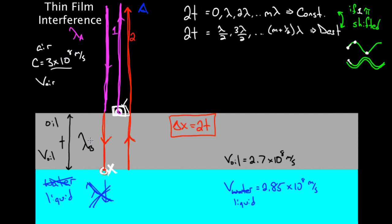Which wavelength do we use in this condition? Do we use the wavelength in the first medium A, in the air? Or do we use the wavelength in the oil? We use the wavelength in the oil — most definitely. We always use the wavelength in the thin film, because that was the portion of the path where the light traveled an extra distance. So that's the part that will matter.